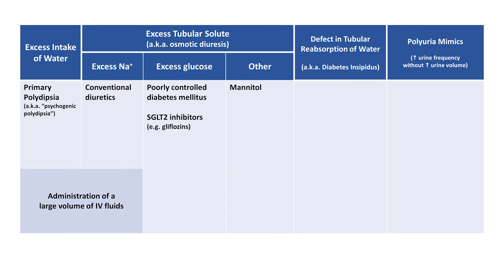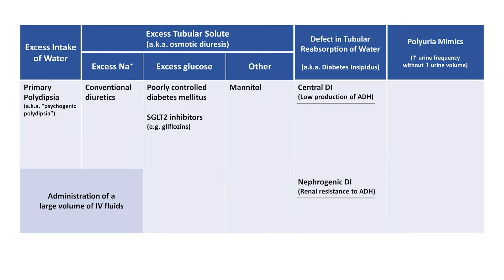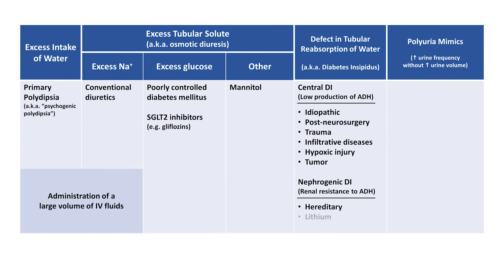A defect in the tubular reabsorption of water is also known as diabetes insipidus, or DI. There are two major types: central DI, due to low production of the hormone ADH by the hypothalamus, and nephrogenic DI, due to renal resistance to ADH. Central DI is often idiopathic but can also be caused by neurosurgery, head trauma, infiltrative disease such as sarcoidosis, hypoxic injury, and tumors. Nephrogenic DI can be hereditary, caused by lithium use, or hypercalcemia.